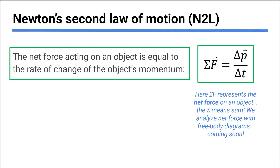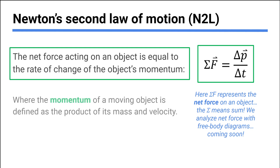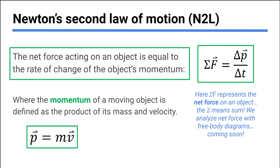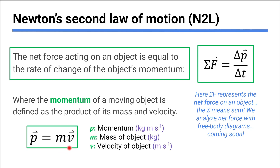We'll get into net force and free body diagrams soon, but let's at least define momentum. Momentum is a product of an object's mass and its velocity. It is a vector, so the direction of your momentum is in the same direction as your velocity. It's sometimes called the 'quantity of motion.' So net force equals how quickly you're changing momentum.